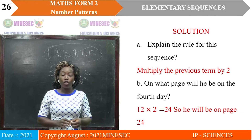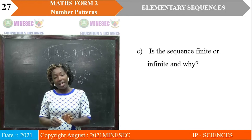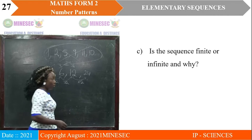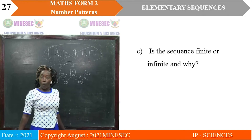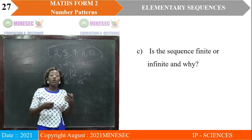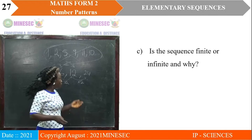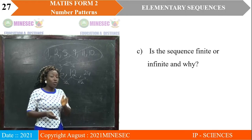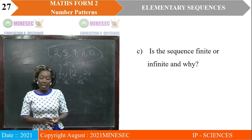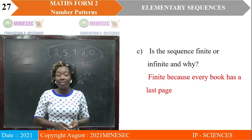On the fourth day, Dan will be on page 24 of his book. Is this sequence finite or infinite? We are not told the book has only 24 pages. But since it is a book, it has a last page. He will keep multiplying until he reaches that last page. So the sequence is finite, because every book has a last page.